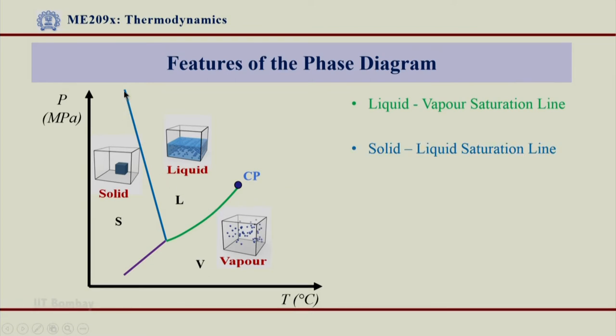Then we have been concentrated on this line which actually depicts the phase transition from solid to liquid region. This is what we call as solid-liquid saturation line. Again we say that solid and liquid coexist here together, they are in equilibrium and that is why we call this as SL line or SL saturation line.